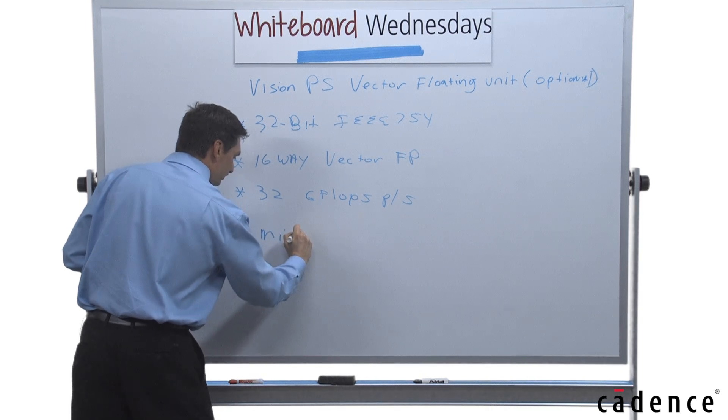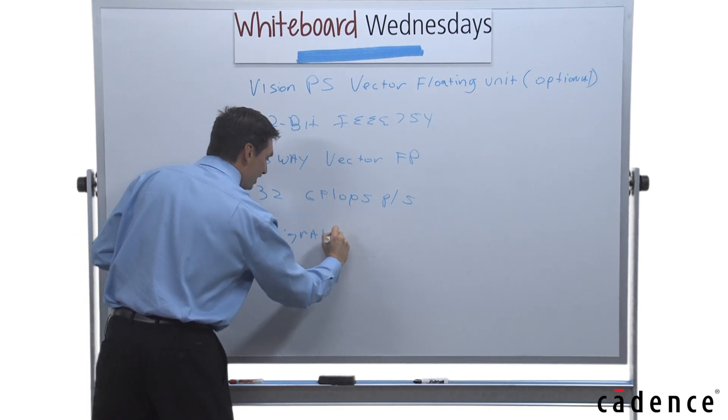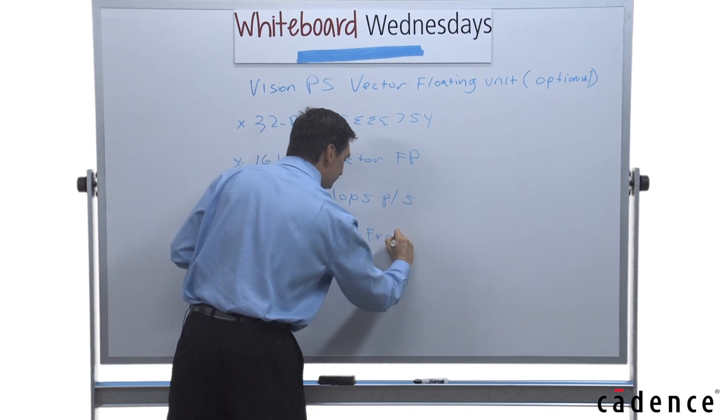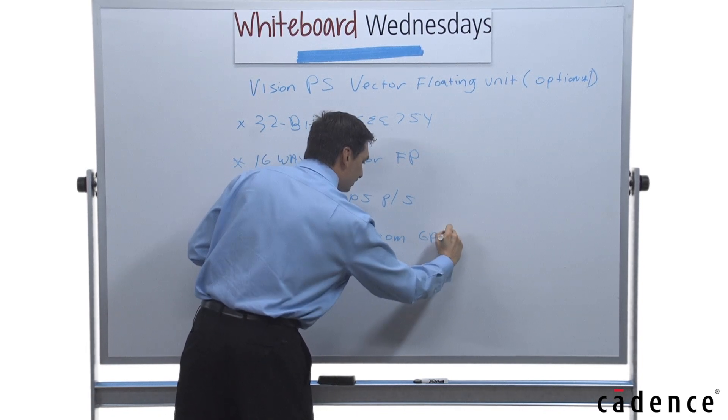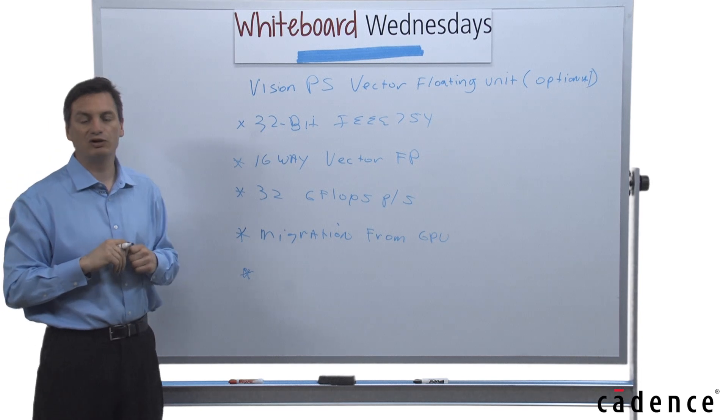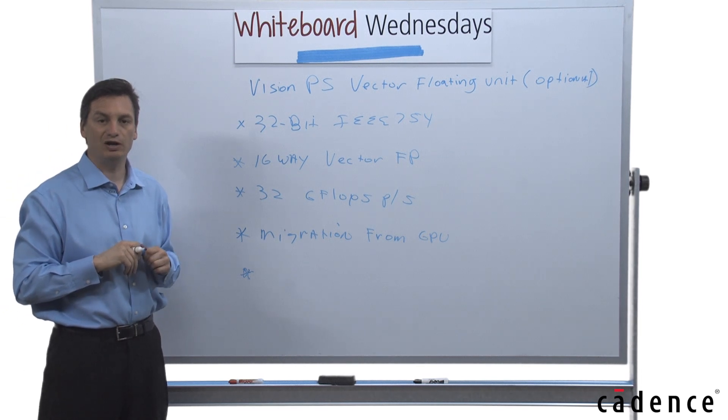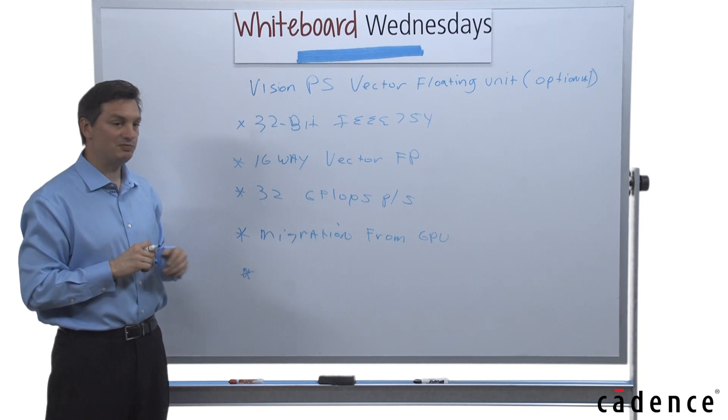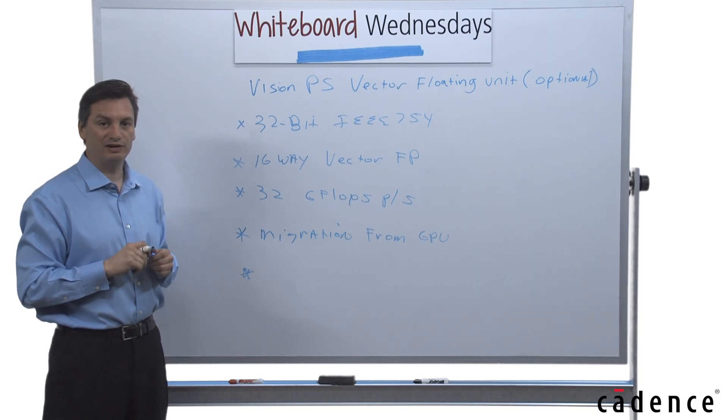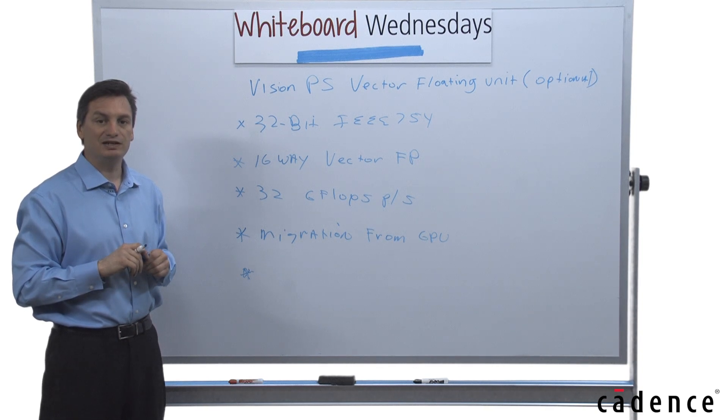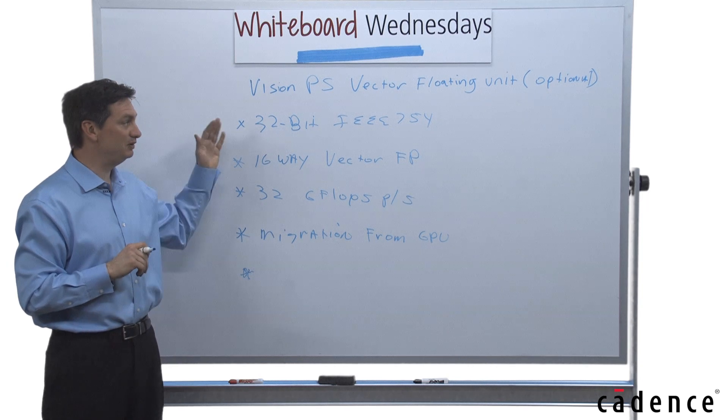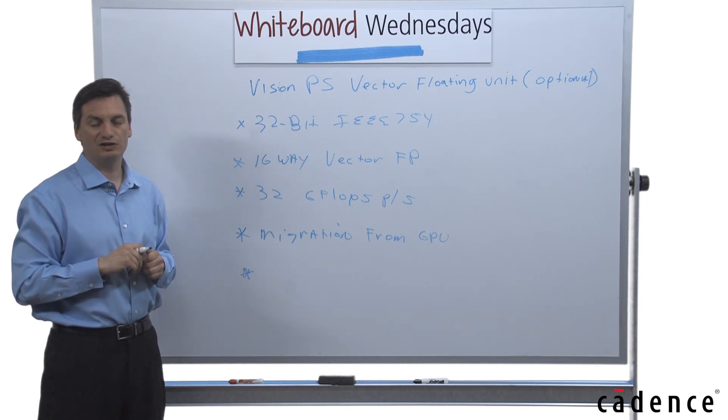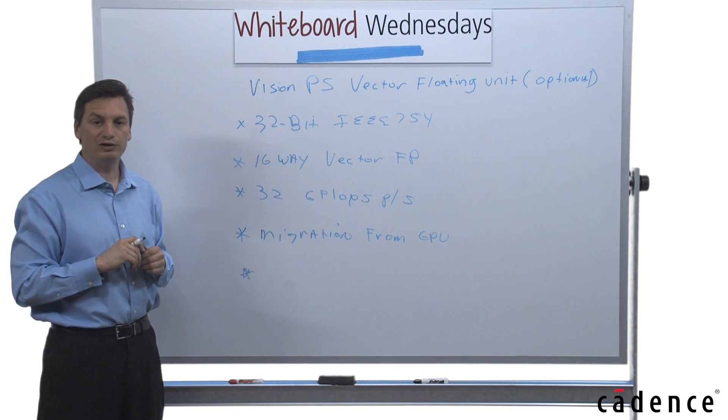Let's talk about software. So we have a good migration path from GPUs. Many of the tool chains built to prototype vision applications are built on GPUs. And so we have a very direct migration path using the tool set for the vision P5. And that includes utilization of our library functions or other libraries that can be linked in using the floating point unit.